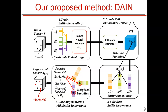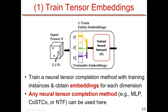Let's look at our proposed method, DANE. We have four major components in our framework. After these four components, new data points are added to the tensor — shown as red dots — compared to the original tensor. This four-step process describes how those augmented data points are generated.